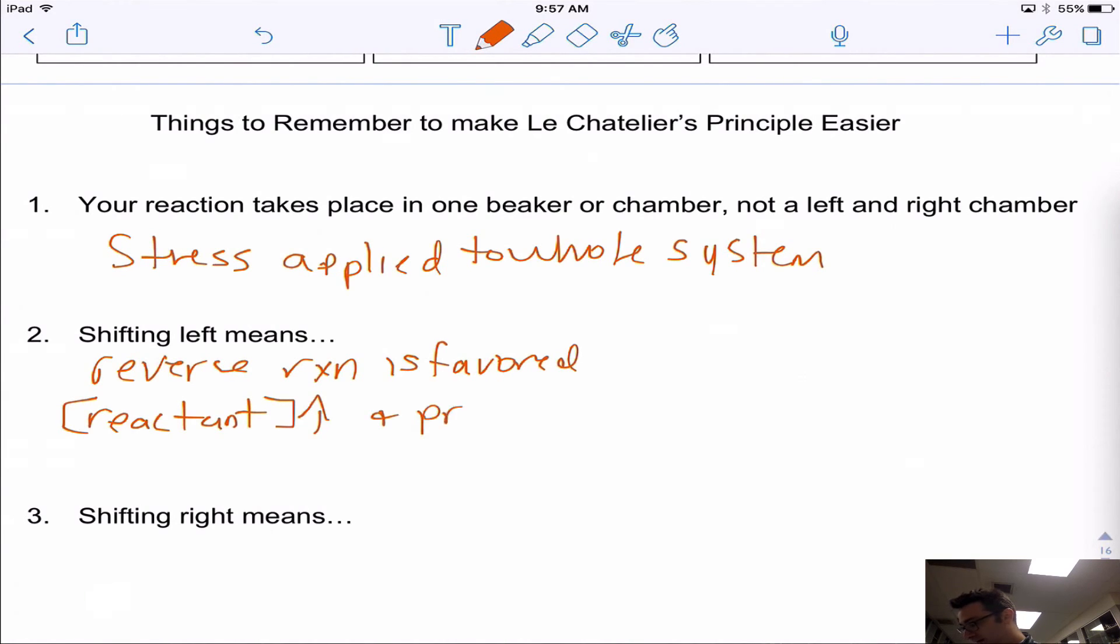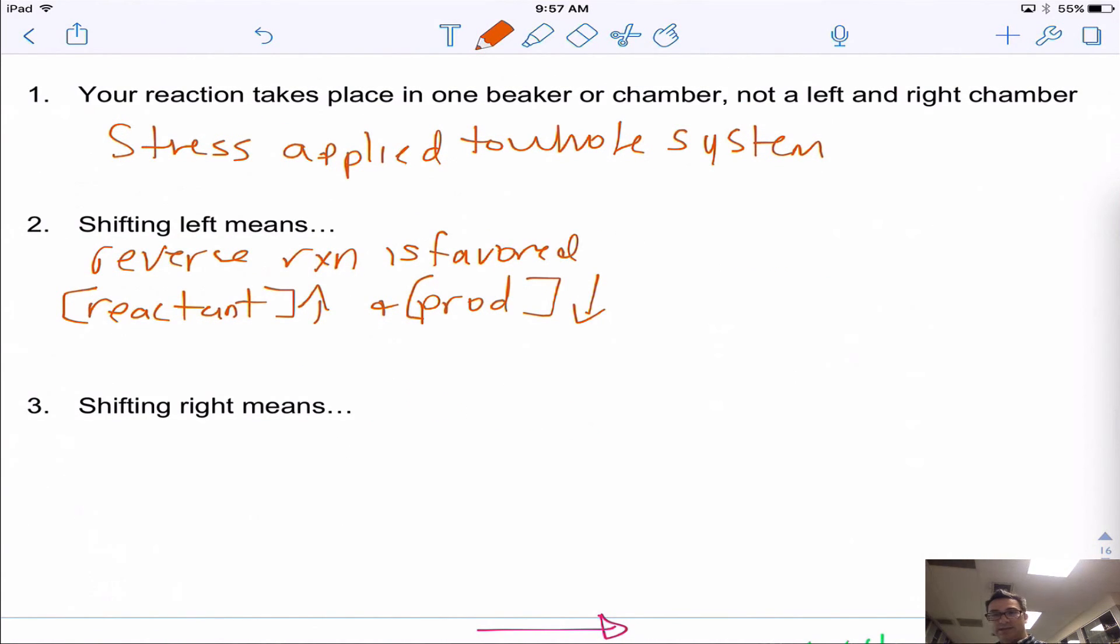Now if you shift to the right, what that means is that you have the forward reaction being favored, and that would be the opposite. Now the reactant concentration will go down and the product concentration will go up. When they want an answer on the Regents exam, they want you to say things like, 'in terms of Le Chatelier's principle, which way will the reaction shift?' When they say in terms of Le Chatelier's principle, what they really want you to do is actually go through and say it'll shift to the left, it'll shift to the right. A lot of times they'll tell you like, 'the products increased, what happened in terms of Le Chatelier's principle?' and then you just have to know it shifted to the right. They don't really require an in-depth explanation of this stuff.